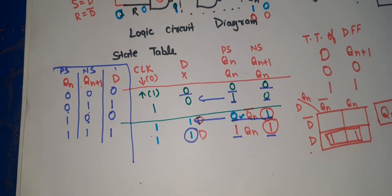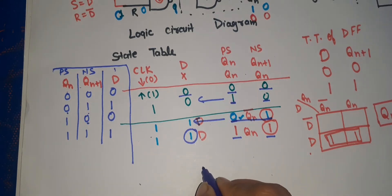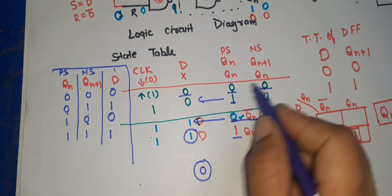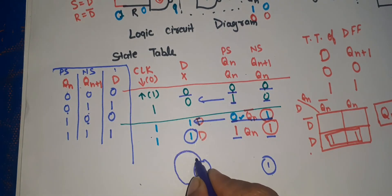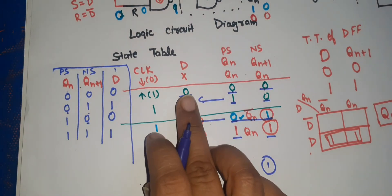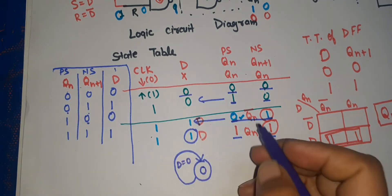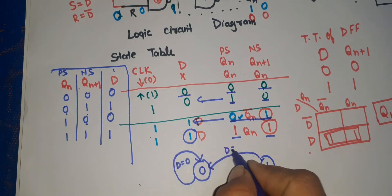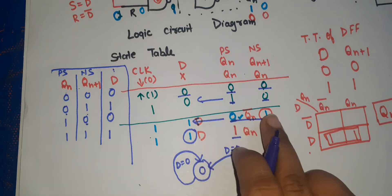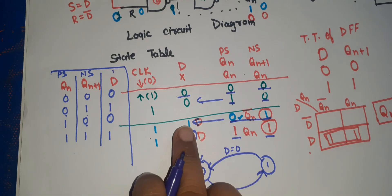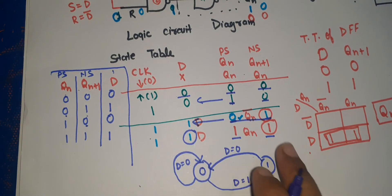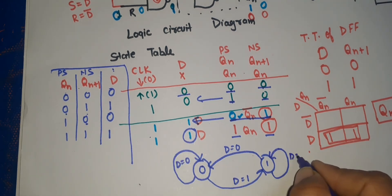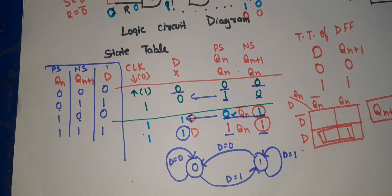Now let's draw the state diagram. A flip-flop is one bit, so there are two states: state zero and state one. When D is zero, starting from state zero, the next state is zero — so there's a self-loop at state zero with D=0. From state one when D is zero, next state is zero. From state zero when D is one, next state is one. This is the state diagram of the D flip-flop.